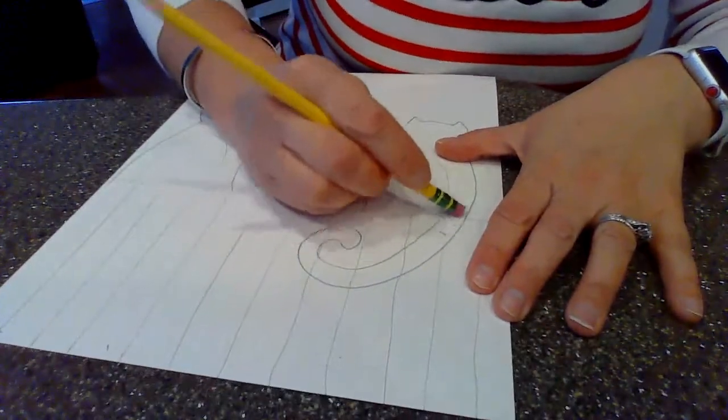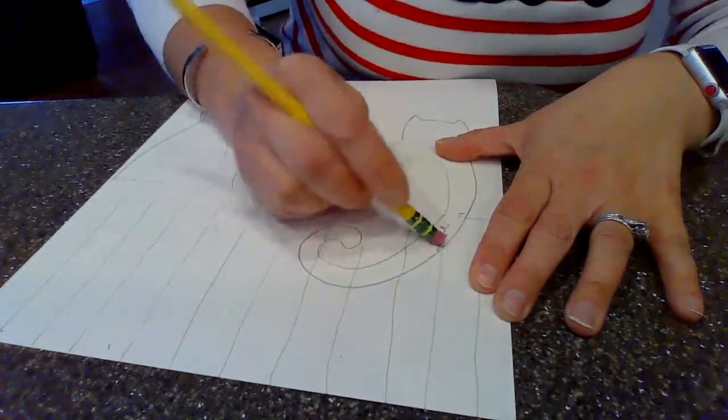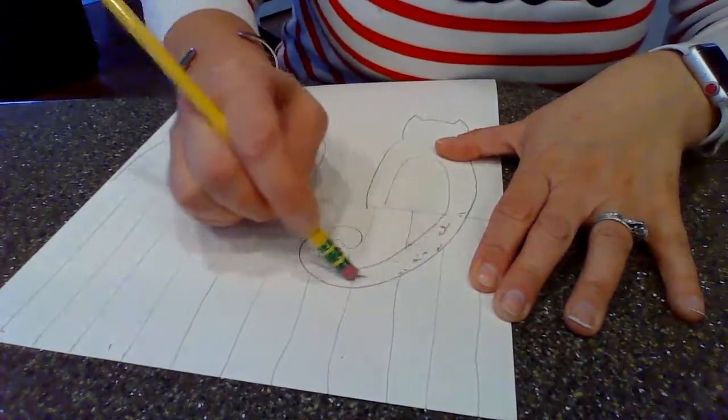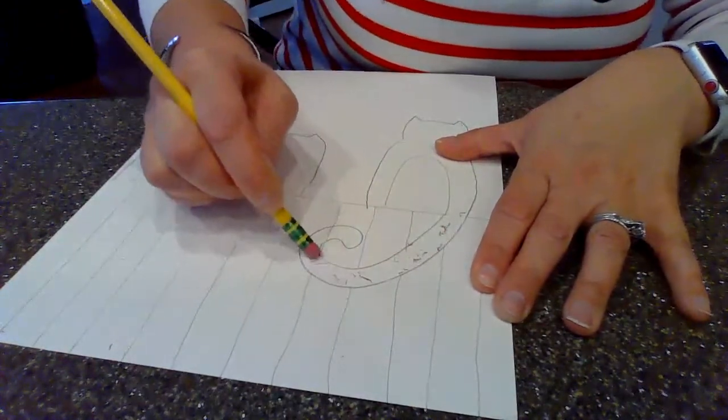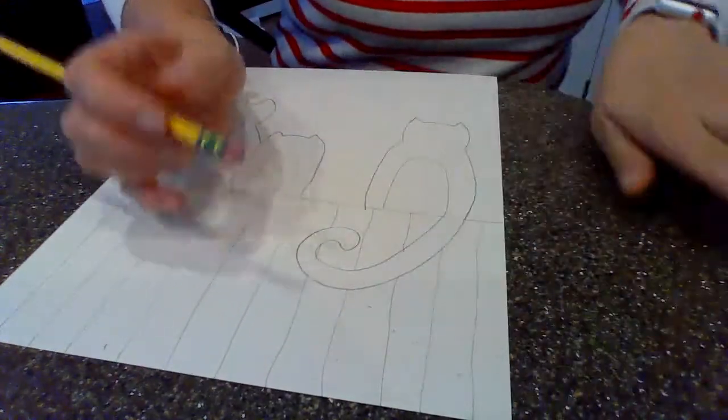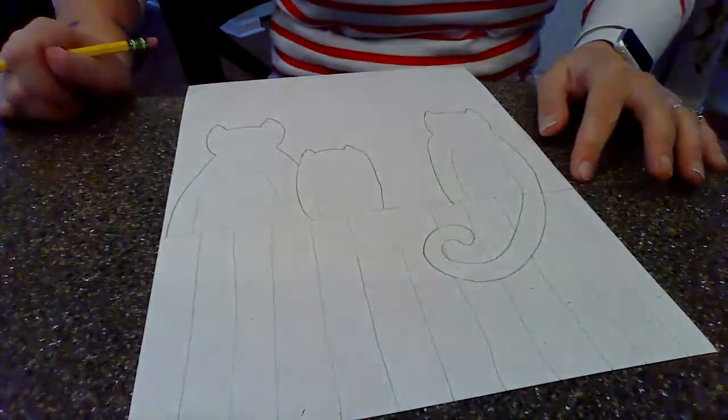So I'm going to have this tail coming down in front and then curving back up to my kitty. Now, because it overlapped some of my fence lines, I'm going to erase those. Because my kitty's tail is not see-through, I want to make sure that it looks correct.